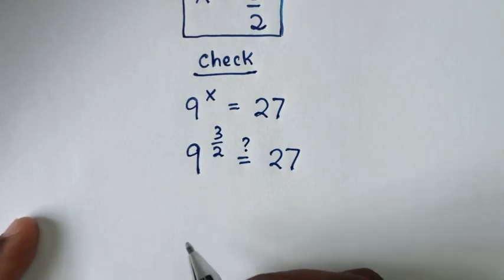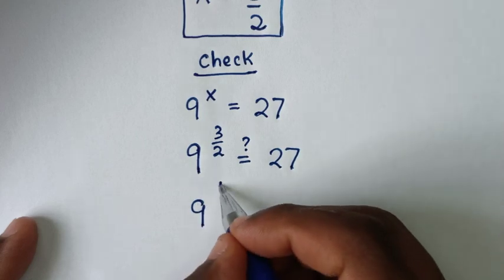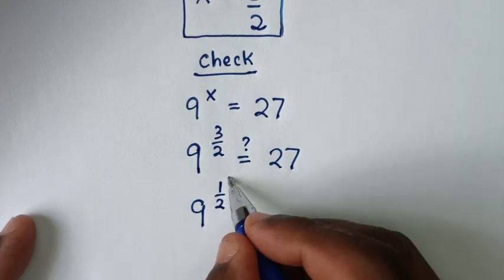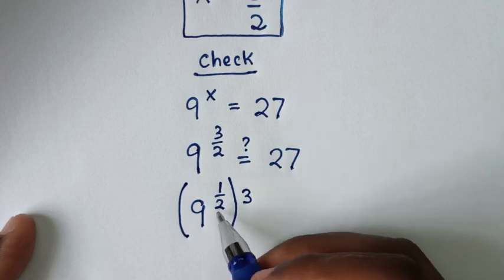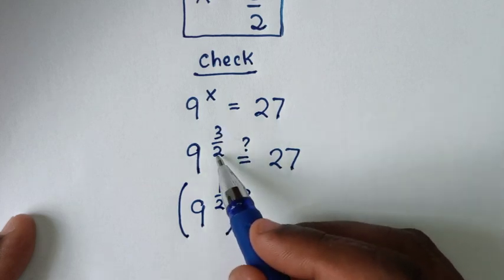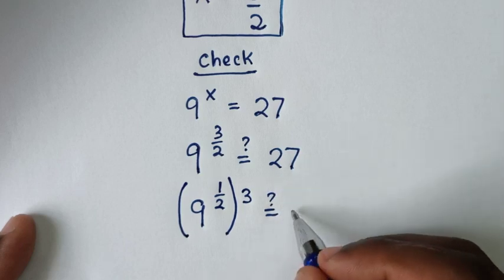Then in the next step, it will be 9 from this 3 over 2 is same as power of a half inside the bracket times power of 3. Whereas a half times 3 is 3 over 2. Then is it equal to this 27.